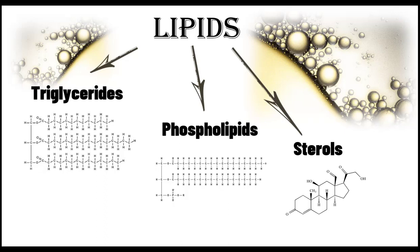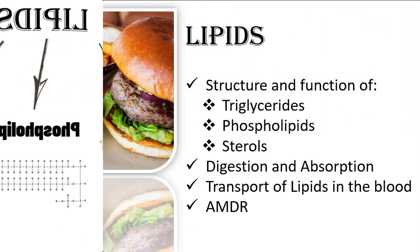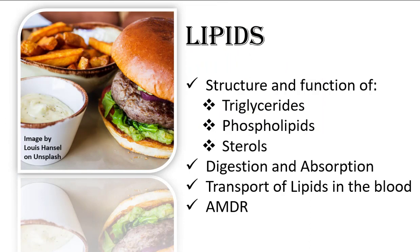What they have in common is that they're primarily composed of carbon and hydrogen, and they have a common chemical property. A significant portion of the molecule is non-polar, which makes them hydrophobic. In addition to structure and function, we're going to take a look at the digestion and absorption, the transport in the blood, and the AMDR.